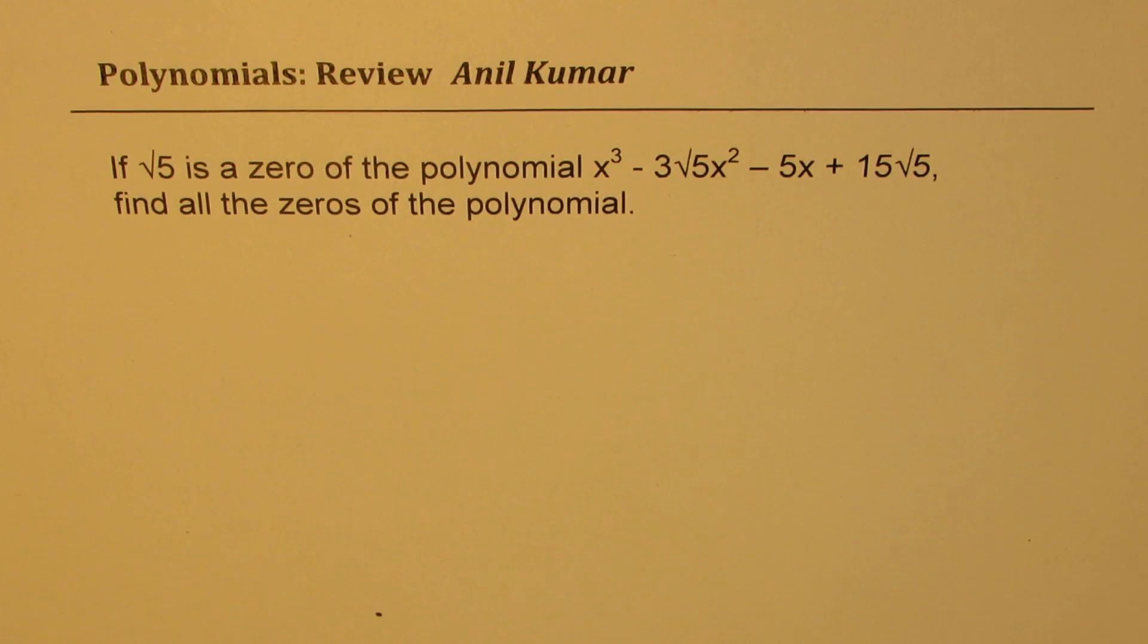If square root 5 is a zero of the polynomial x cubed minus 3 square root 5 x squared minus 5x plus 15 square root 5, find all the zeros of the polynomial. You can always pause the video, answer the question, and then look into my suggestions.